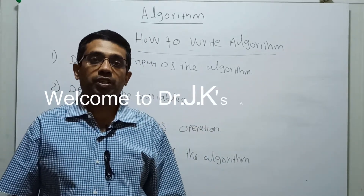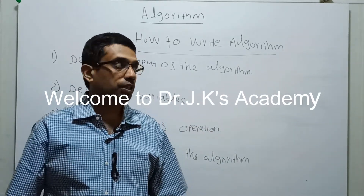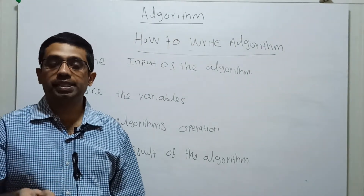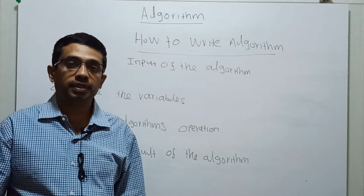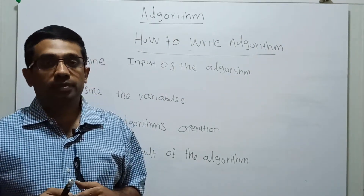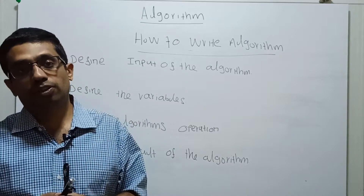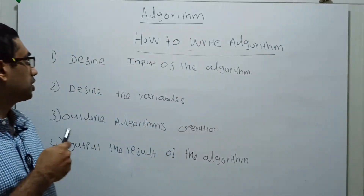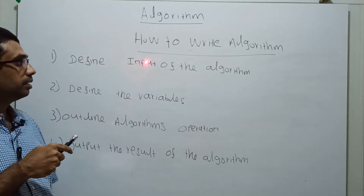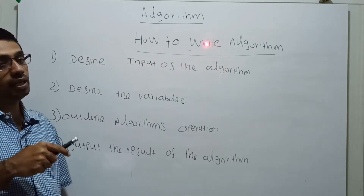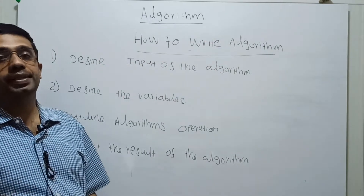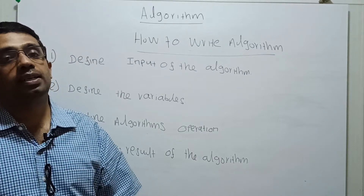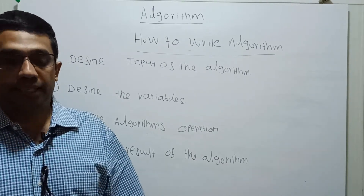Hello all, welcome to the video lecture on how to write an algorithm. To write an algorithm, we should be clear on four steps. The first step is to define the input of the algorithm. For example, we will take a problem to calculate the area of the circle.